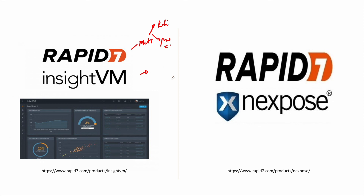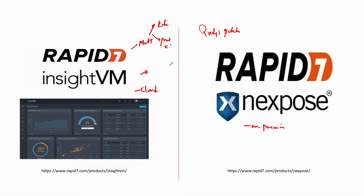Rapid7 has two vulnerability management solutions: InsightVM, which is cloud-based, and Nexpose, which is on-premise. The key differentiator compared to others is that while Qualys can perform patching natively within the platform, Rapid7 and others provide recommendations and a ticketing system to track whether remediation has been completed. InsightVM specifically offers a project-based tracking system to manage vulnerabilities and their remediation.